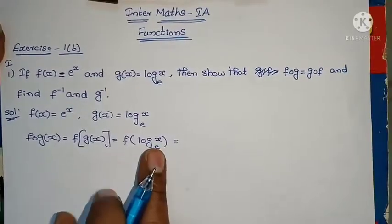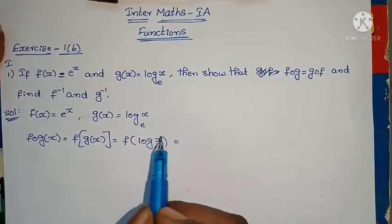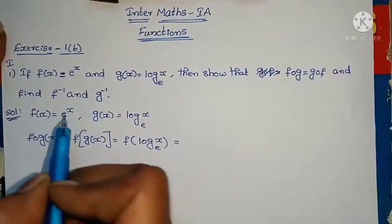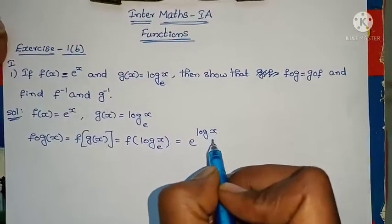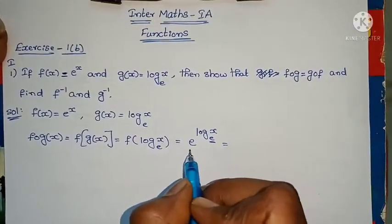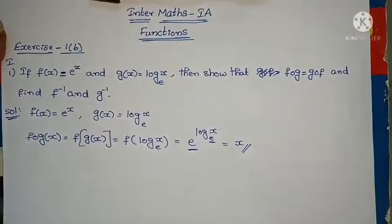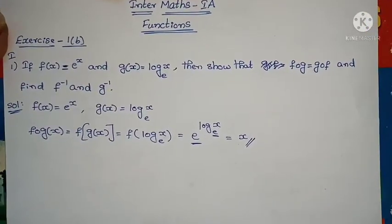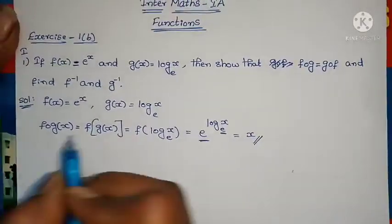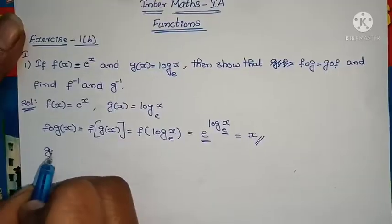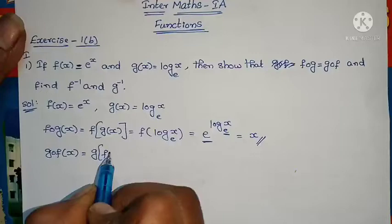Now we need to find f∘g. f∘g(x) means f of g(x). When we write f∘g, remove the circle and put brackets. f(g(x)) where g(x) value is log_e(x). So in the f(x) model, wherever x appears, we substitute log_e(x). That gives e^(log_e(x)).